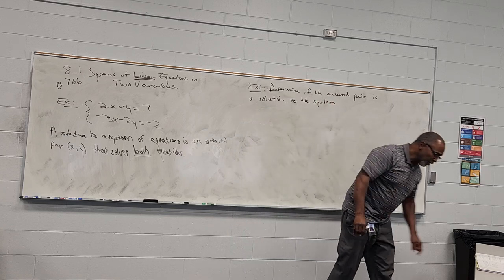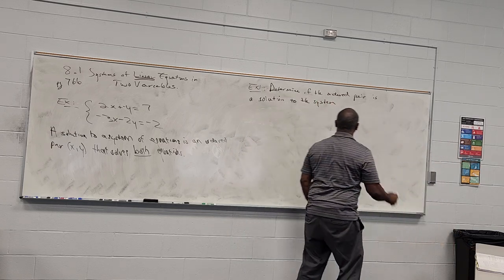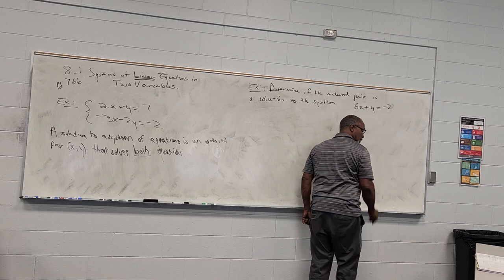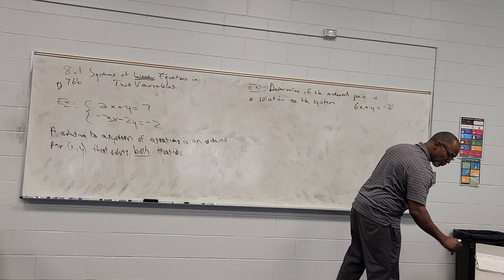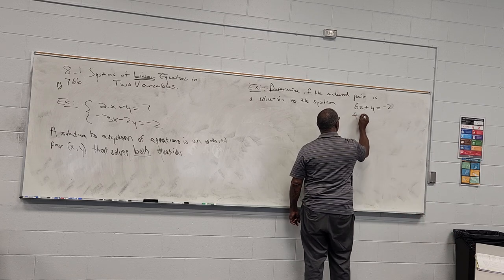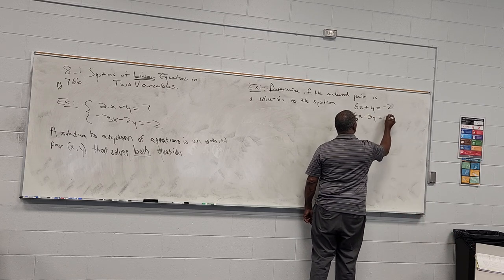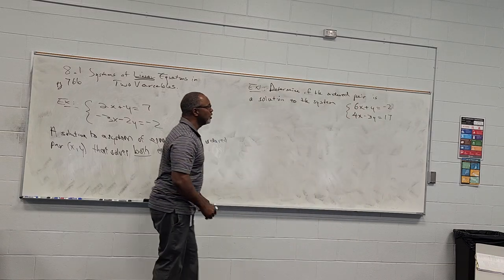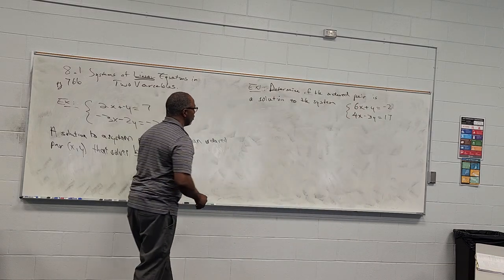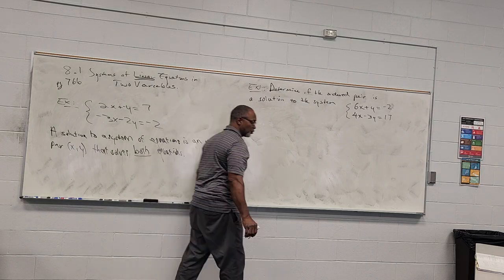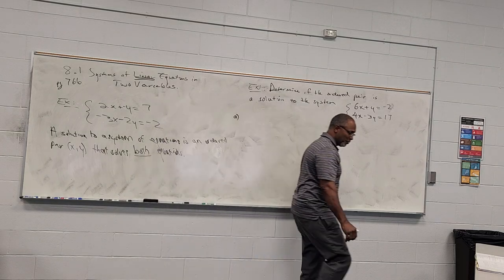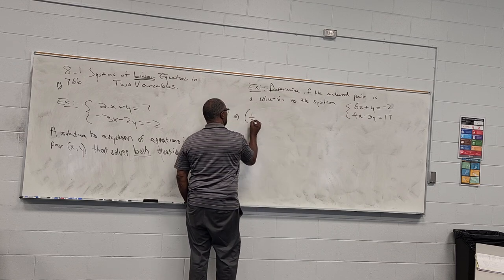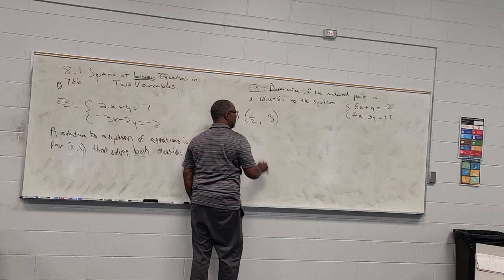They give me a system: 6x plus y equals negative 2, and the second equation is 4x minus 3y equals 17. I want to know if the following ordered pairs are solutions to the system. The first ordered pair they give me is one-half, negative 5.